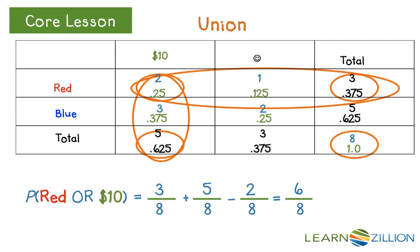This results in a total probability for red or lucky of 6 divided by 8, or 75%.